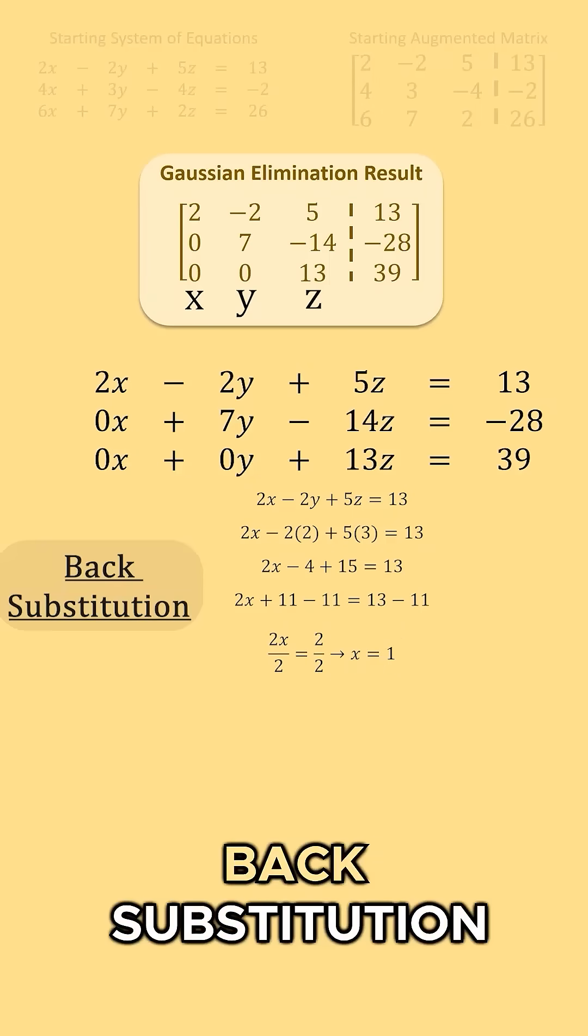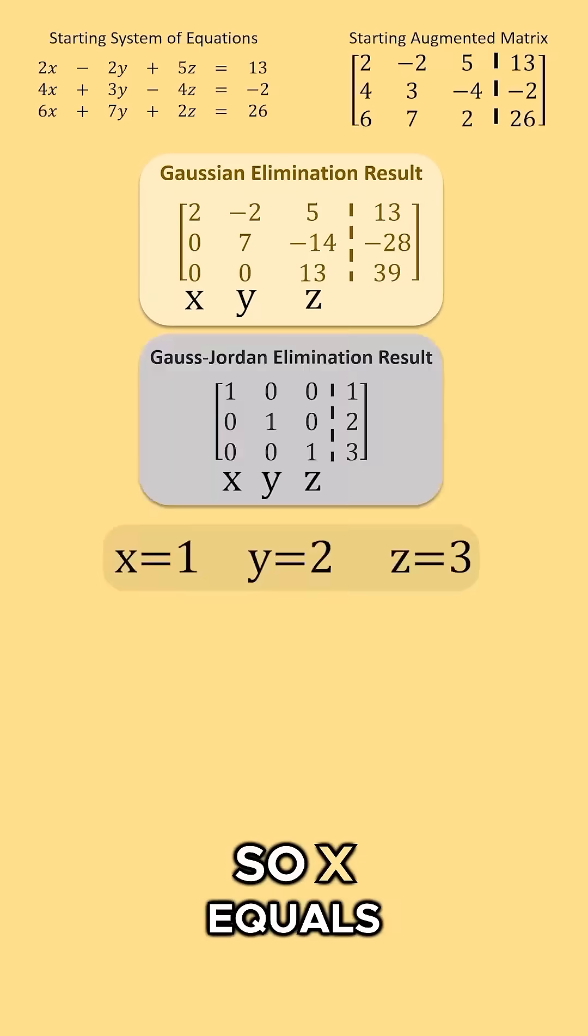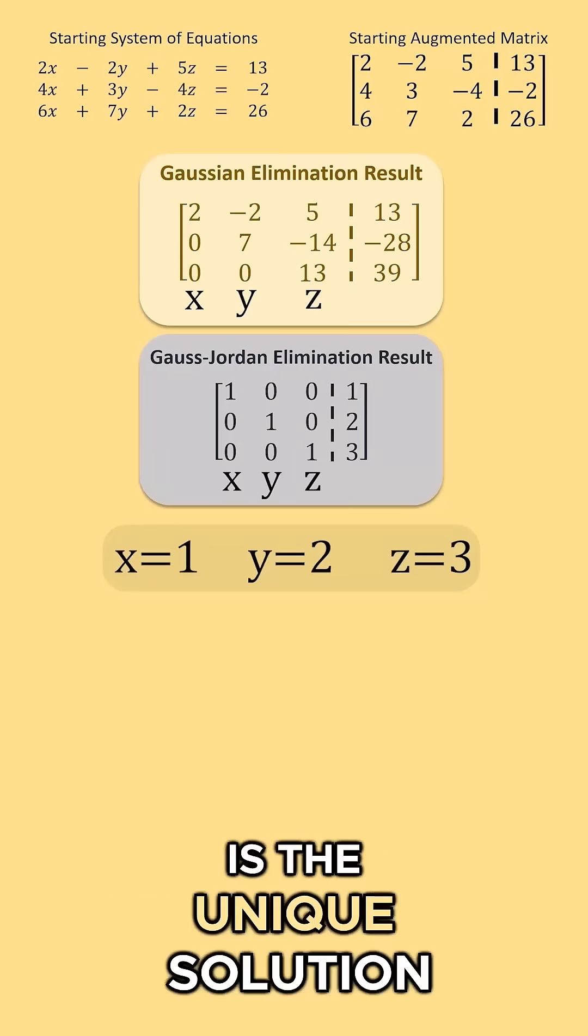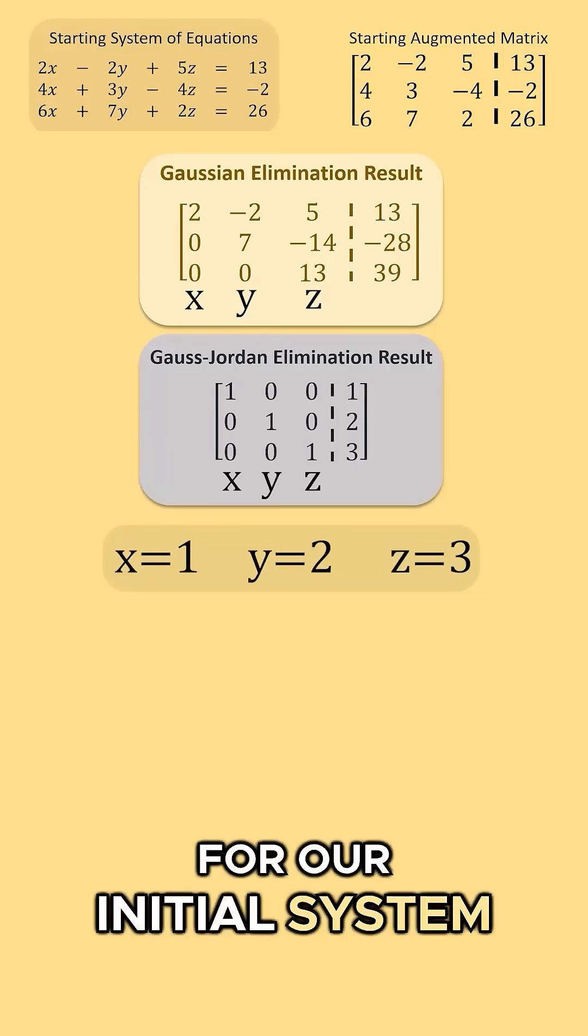This process on the left is called back substitution. So, x equals 1, y equals 2, and z equals 3 is the unique solution for our initial system of equations.